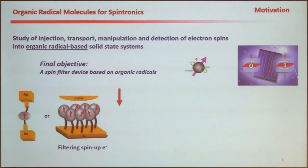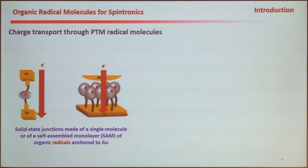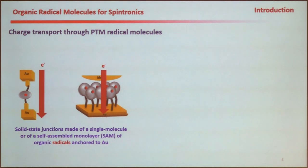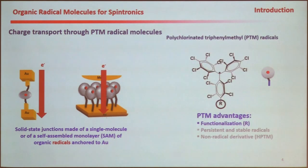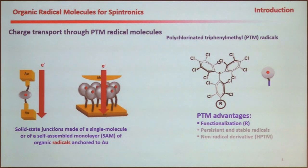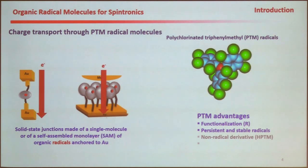But before doing such a long-term objective, we decided to study the transport through these junctions — the transport through a single molecule junction made with one single radical molecule, or with a collection of radicals in a self-assembled monolayer. As for the radical, we chose these particular radicals for different reasons. First, it is quite easy to functionalize, to put some linkers and do chemistry.